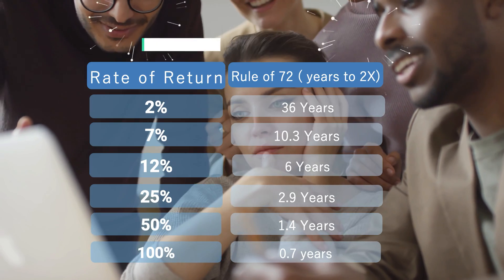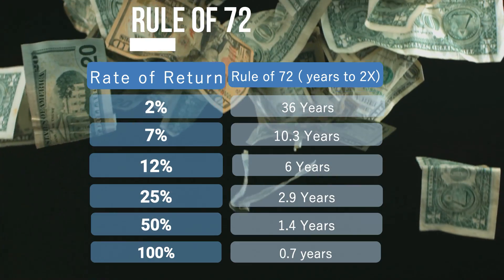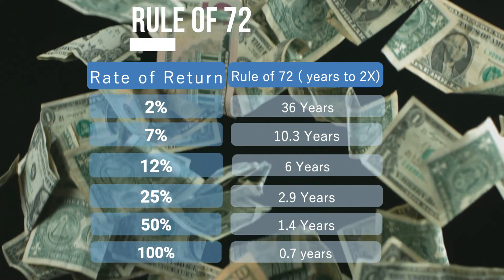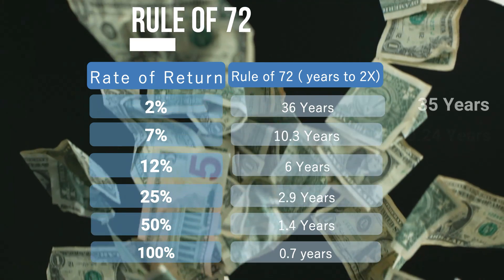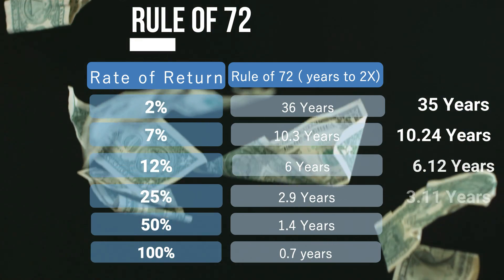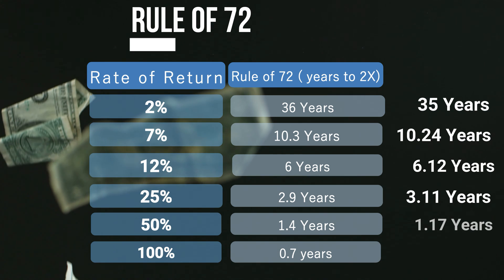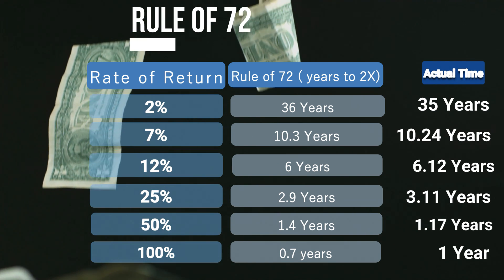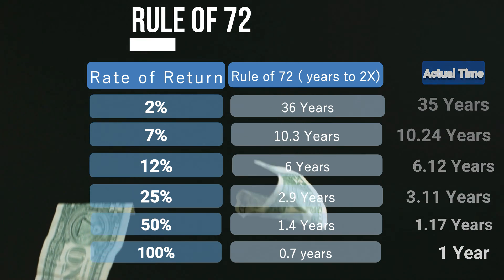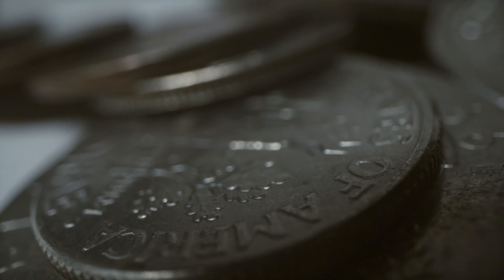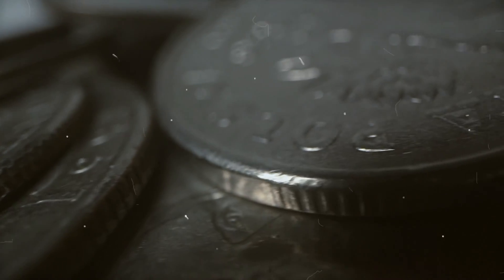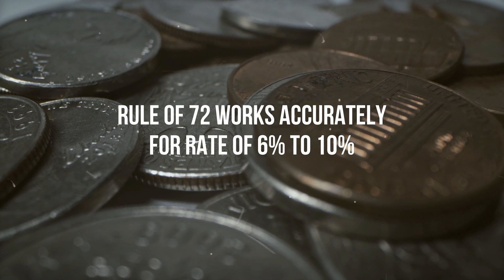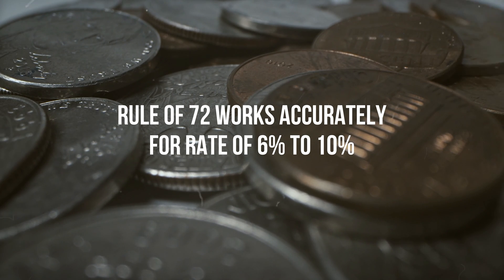On screen you can see a chart based on the Rule of 72. Based on this chart, if you get a return of 100%, the time required to double your money is just 0.7 years, but the actual time required is 1 year. So the Rule of 72 does not give an accurate result for higher percentage returns — it works accurately only for interest rates in the range of 6% to 10%.